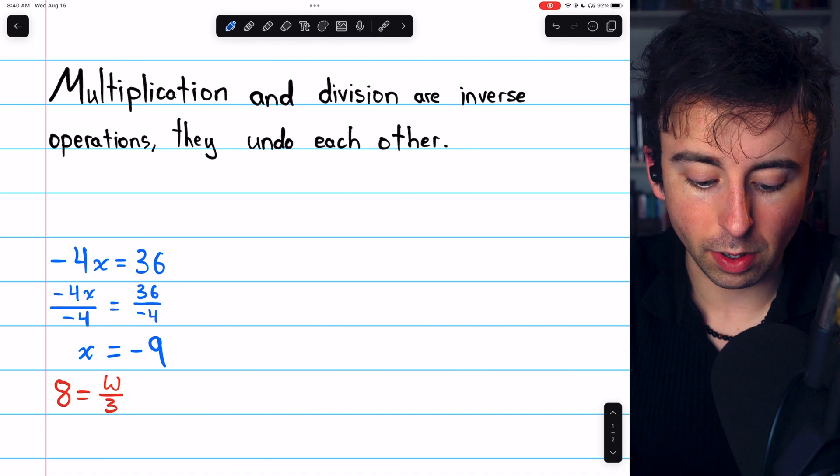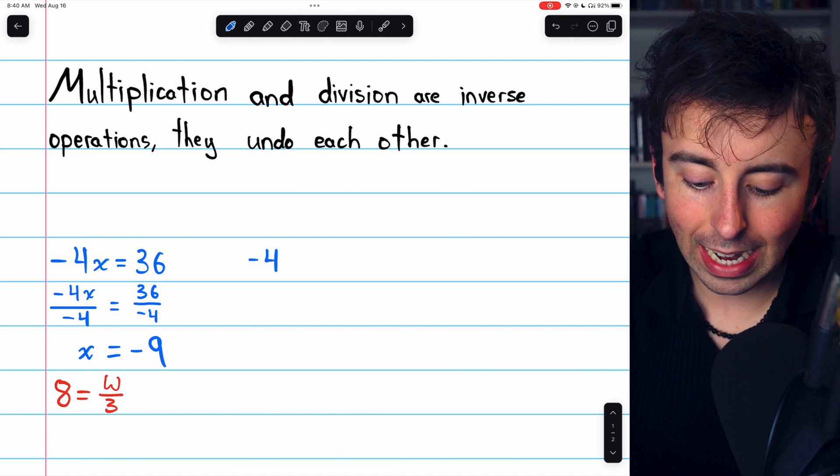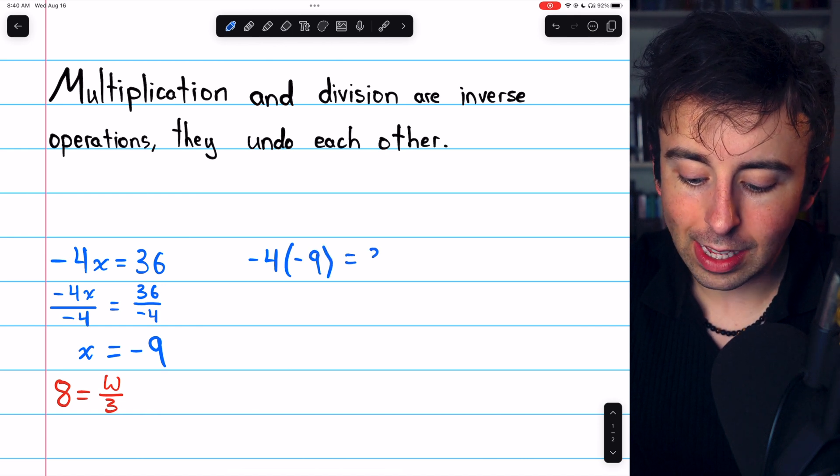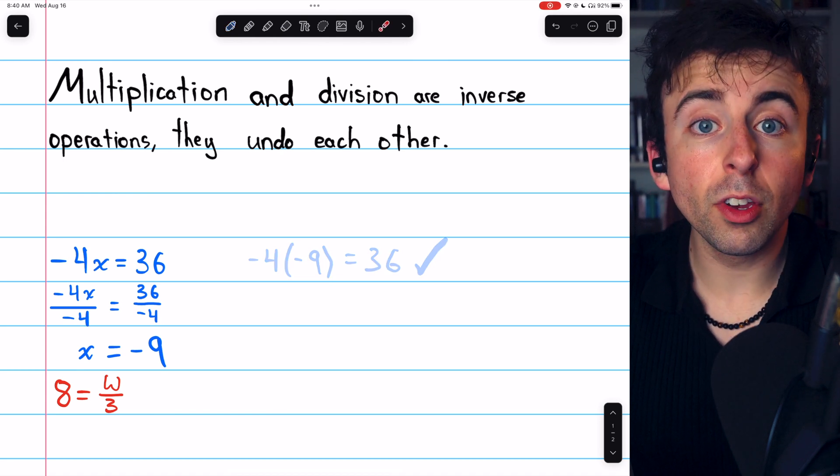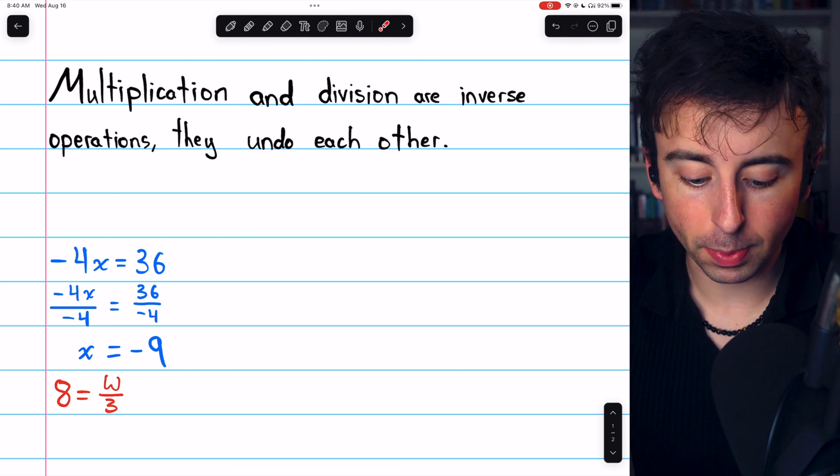We can plug this negative 9 back in for x to verify it. That would give us negative 4 times x, which we think is negative 9, equals 36. And this equation is true, thus verifying our solution. So in that problem, we performed division to undo multiplication.